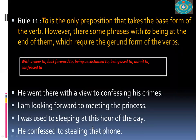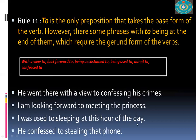'To' is the only preposition that takes the base form of the verb. However, there are phrases ending in 'to' that require the gerund form: 'with a view to', 'look forward to', 'be accustomed to', 'be used to', 'admit to', 'confess to', and others. 'He went with a view to confessing the crime.' 'I'm looking forward to meeting the princess.' 'I was used to sleeping at this hour of the day.' 'He confessed to stealing that phone.' These are exceptional uses where gerund follows the preposition 'to'.